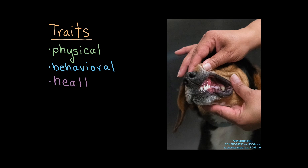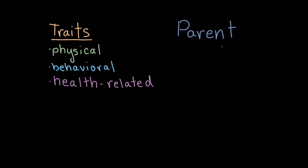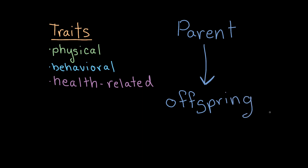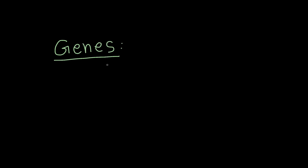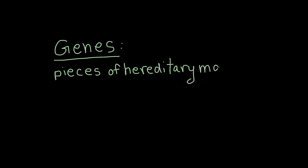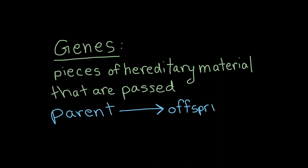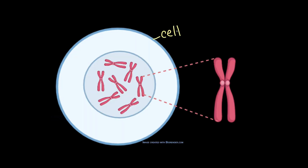Or they can be health-related, such as a dog's risk of developing a certain disease. Traits are passed from parents to offspring. This is why our puppy looks so similar to his parents, who were also Labradors. But how does this occur? Well, traits are passed on from one generation to the next through the inheritance of genes. Genes are pieces of hereditary material that are passed from parents to offspring. Genes are found inside of an organism's cells as part of structures called chromosomes. In multicellular organisms, chromosomes are found inside the cell nucleus.